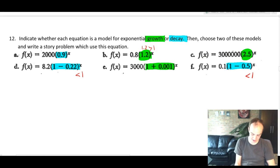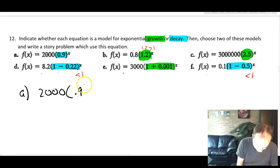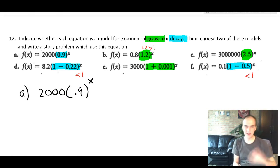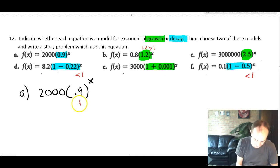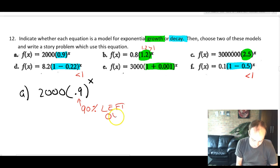I also wrote for you to ask you to choose two of these models and write like a story problem, which uses that equation. So just as an example, let's do 2,000 times 0.9 to the x. Now, the problem with the interpreting challenge here is what the heck do you do with this 0.9?